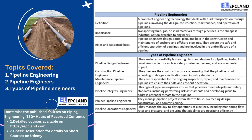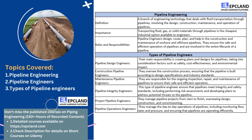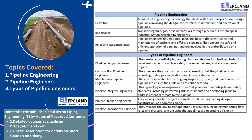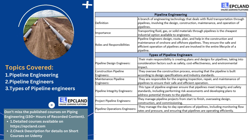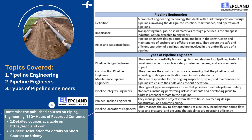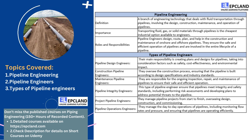The process of pipeline engineering begins with the planning and design phase, where engineers determine the optimal route for the pipeline, its diameter, and the materials that will be used to construct it. They also consider environmental factors such as terrain, weather conditions, and potential hazards in order to minimize the impact of the pipeline on the surrounding ecosystem. Once the design is finalized, engineers oversee the construction and installation of the pipeline, ensuring that materials are of high quality, welding and joining procedures are performed correctly, and the pipeline is installed in accordance with industry standards and regulations.